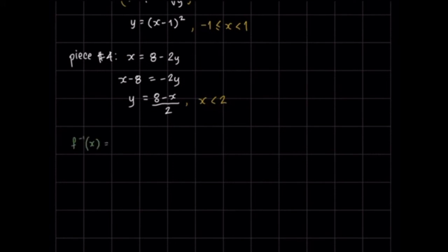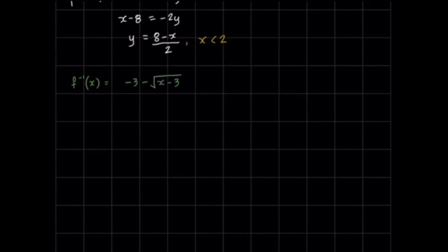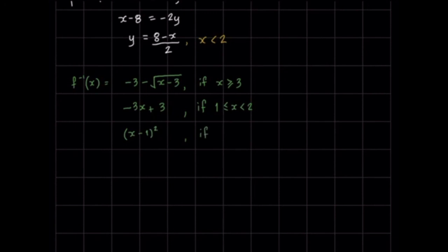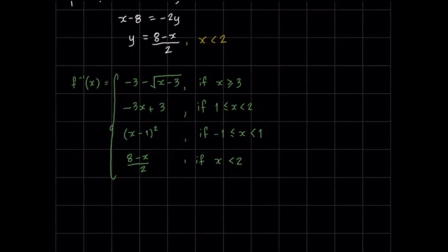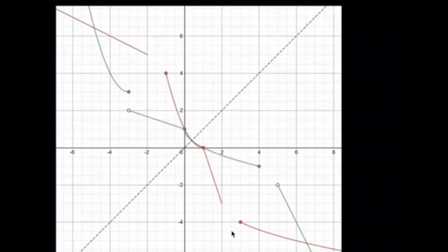Now we're ready to write our inverse as a piecewise function — four pieces as well. The first piece is −3 − √(x − 3) if x ≥ 3. The second piece is −3x + 3 if 1 ≤ x < 2. The third piece is (x − 1)² if −1 ≤ x < 1. And the fourth piece is (8 − x)/2 if x < 2. We enclose them all in a bracket to denote it's one function. Looking at the graph, the green is the original piecewise function and the red is our inverse — which is the mirror reflection of the green graph along the line y = x.